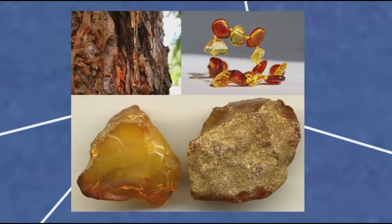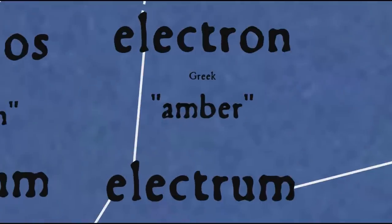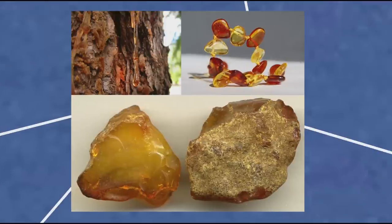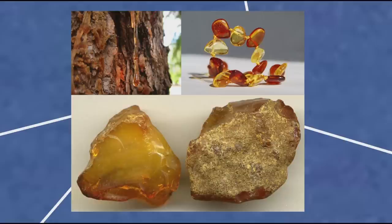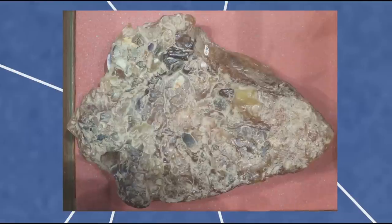As for the fossilized tree resin, which typically came from the area under the Baltic Sea, in Greek it was called 'electron', which became Latin and English 'electrum' — a word which could also refer to an alloy of gold and silver with a colour similar to amber. The English words 'electron' and 'electricity' came about because early experiments with electricity involved rubbing amber to produce a static electric charge. The ultimate etymology of Greek 'electron' is uncertain, but one suggestion is that it might be related to the Greek word 'helios' meaning sun, and therefore also related to the English word 'helium', so-called because the element was first identified during an observation of a solar eclipse, ultimately coming from the Proto-Indo-European 'sawal', also the source of the English word 'sun'.